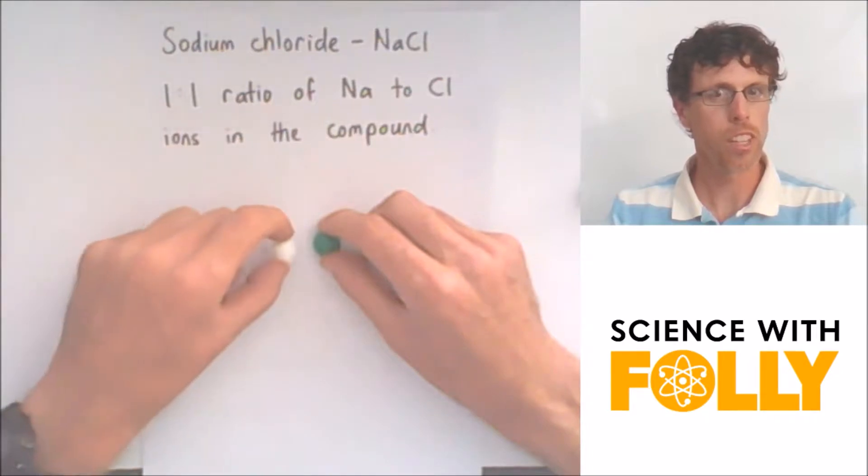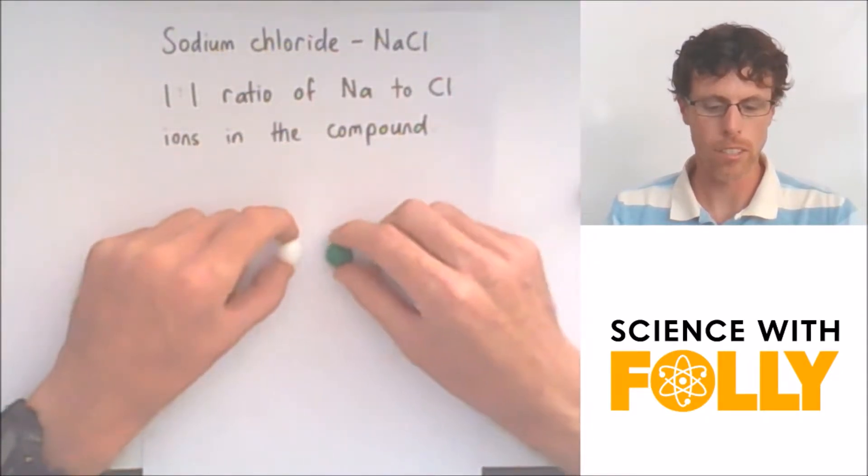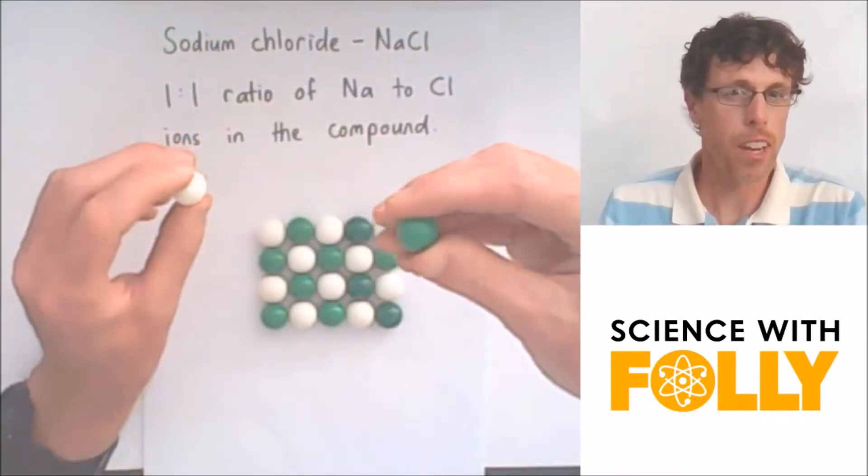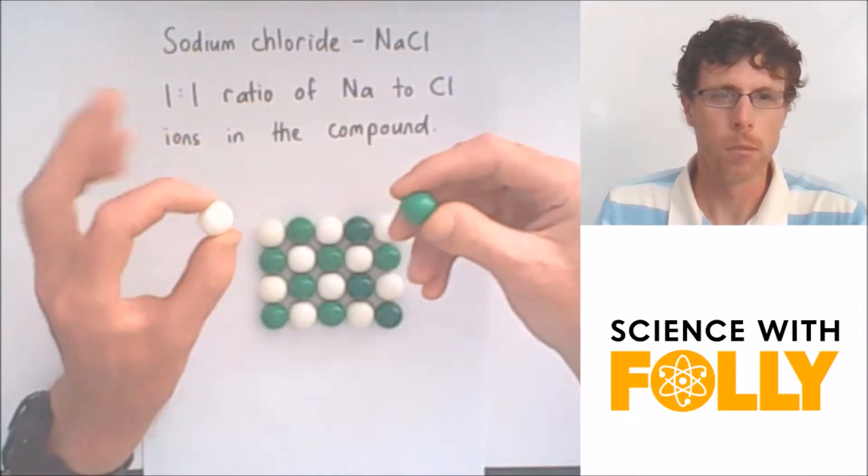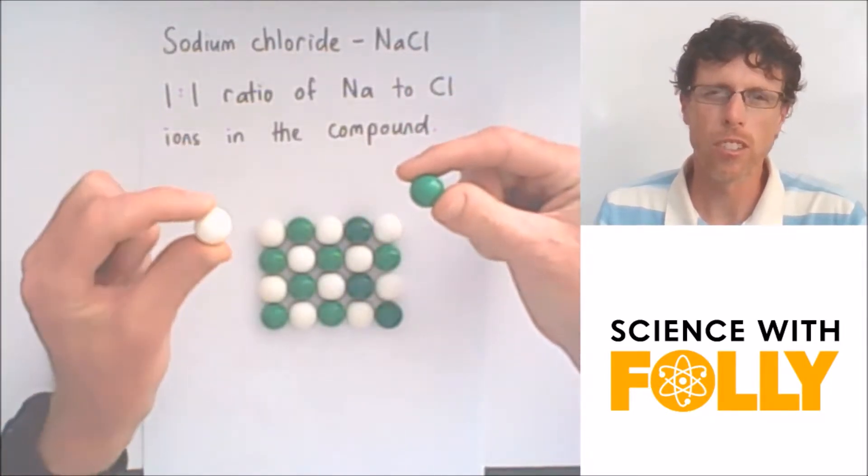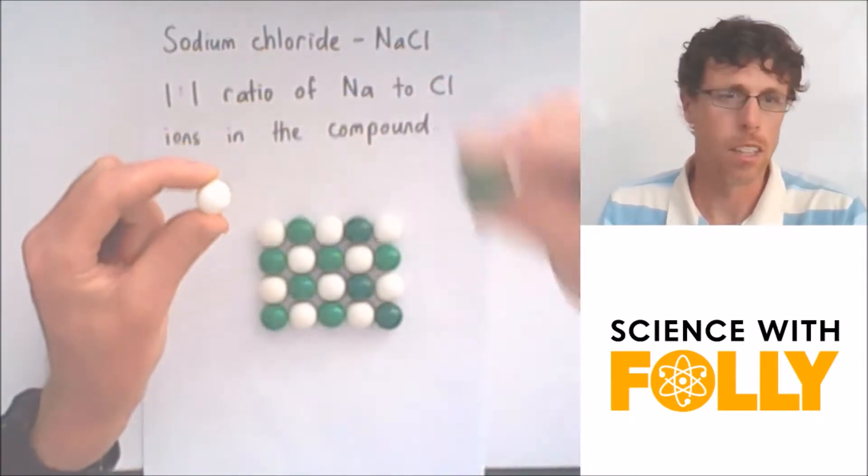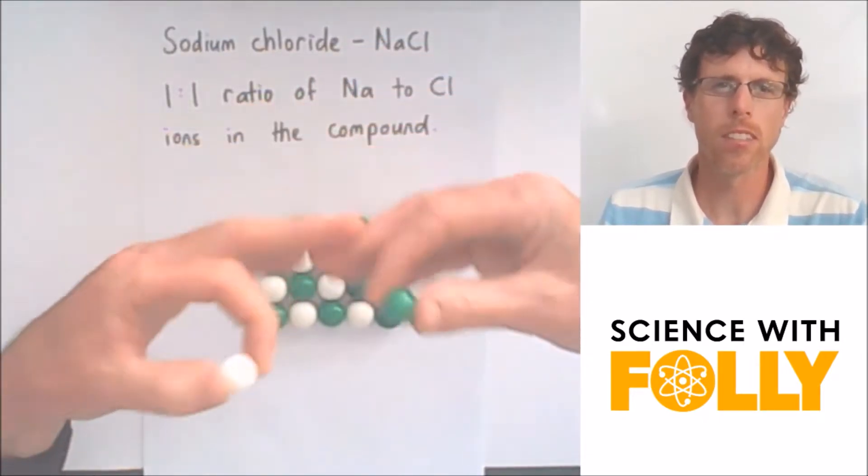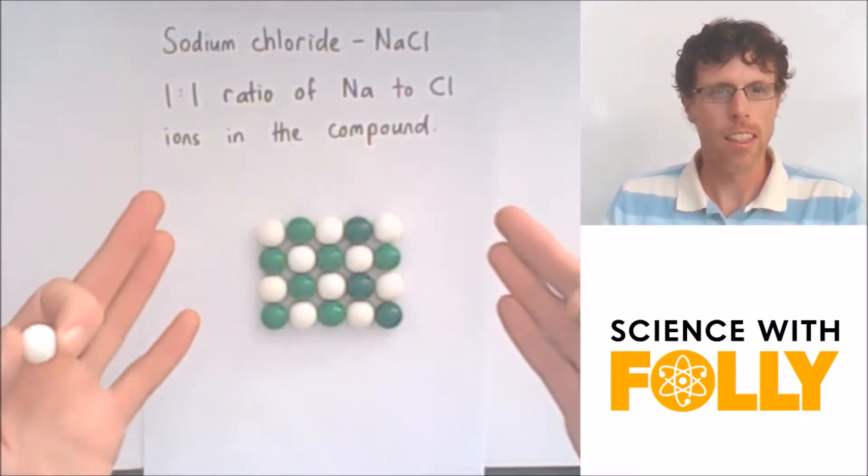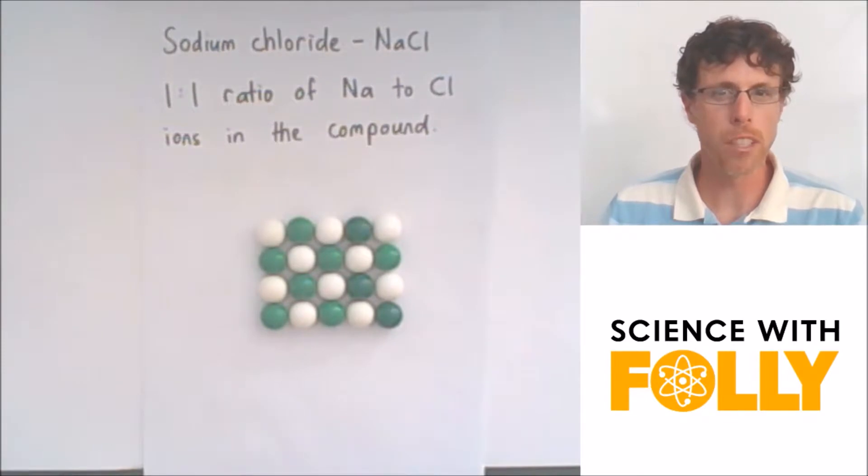Sodium's got a positive charge, chloride's got a negative charge. Now, if I have a lump of sodium chloride, which is just salt, it's not just one sodium ion and one chloride ion. There's millions and millions of them. And as I said, they're held together in what we call a three-dimensional lattice.